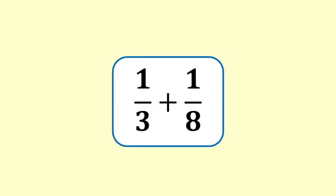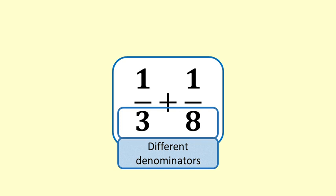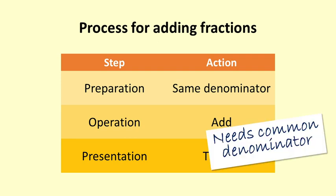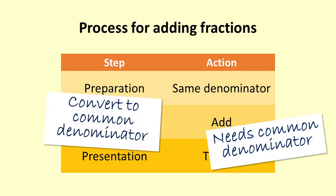One third and one eighth have different denominators. Adding fractions has three steps: preparation, operation and presentation. To be able to add fractions in the operation step they need to have a common denominator. So in the preparation step we need to convert the fractions to have a common denominator.